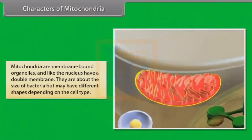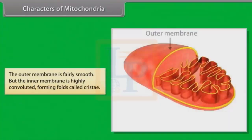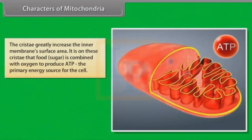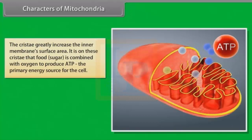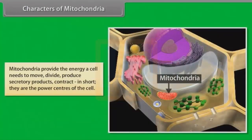Mitochondria are membrane-bound organelles and, like the nucleus, have a double membrane. They are about the size of bacteria but may have different shapes depending on the cell type. The outer membrane is fairly smooth but the inner membrane is highly convoluted, forming folds called cristae. The cristae greatly increase the inner membrane's surface area. It is on these cristae that food (sugar) is combined with oxygen to produce ATP, the primary energy source for the cell. Mitochondria have their own DNA and ribosomes, and provide the energy a cell needs to move, divide, produce secretory products, and contract. In short, they are the power centers of the cell.